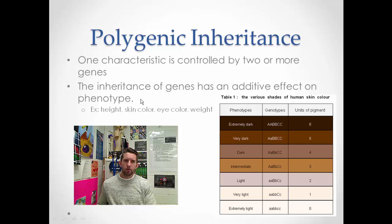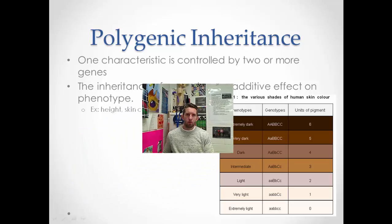Polygenic inheritance is pretty straightforward. You can view it as a bell curve, sort of a continuum.